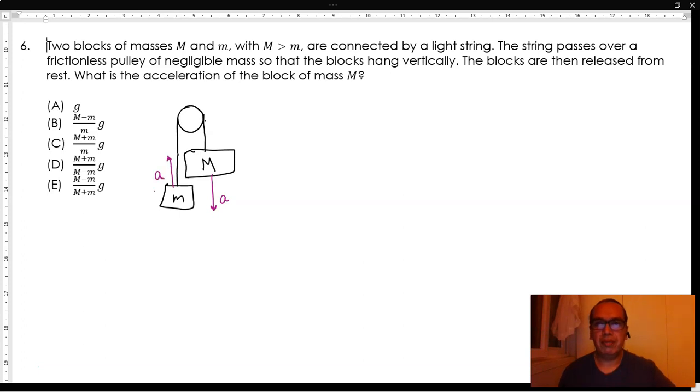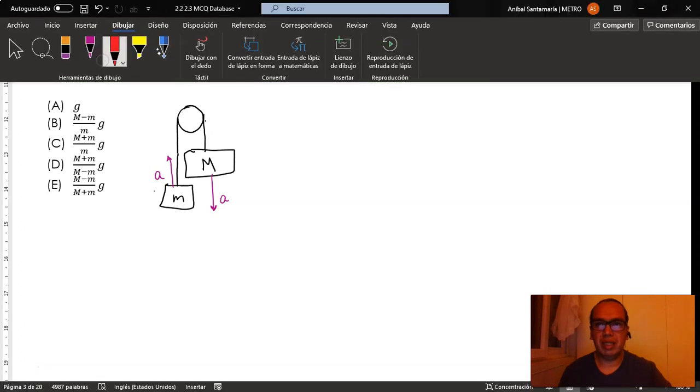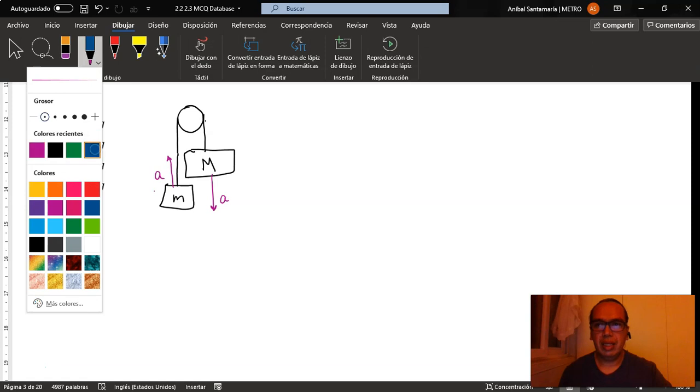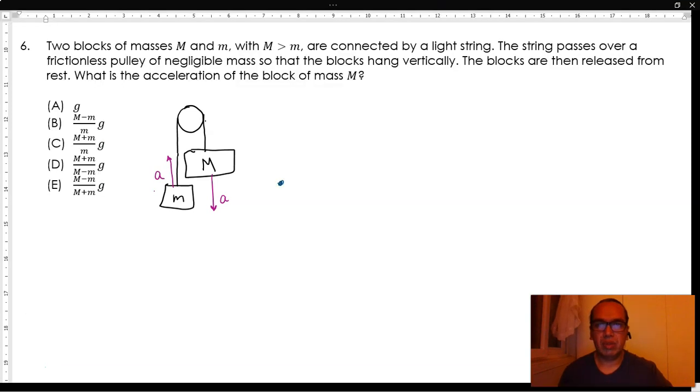Now if we consider free body diagrams for each of these situations, in the case of the little mass, we must have a tension upward that should be larger than the weight of the mass, mg. On the other hand, in the case of the big mass, we have a very large gravitational force Mg compared to the same tension T.